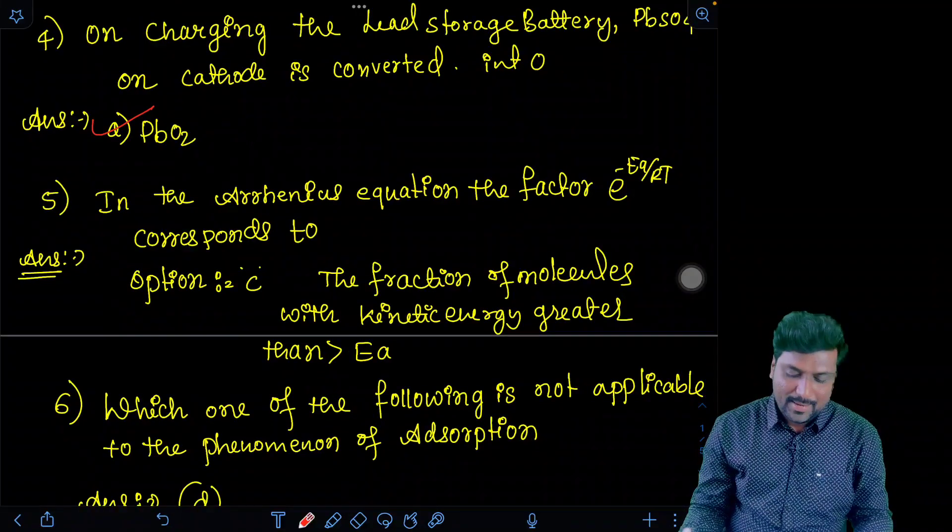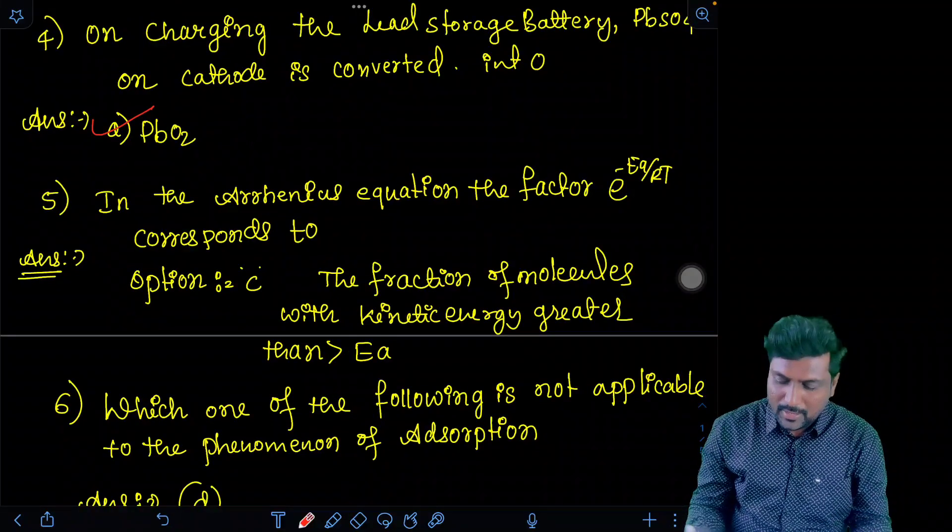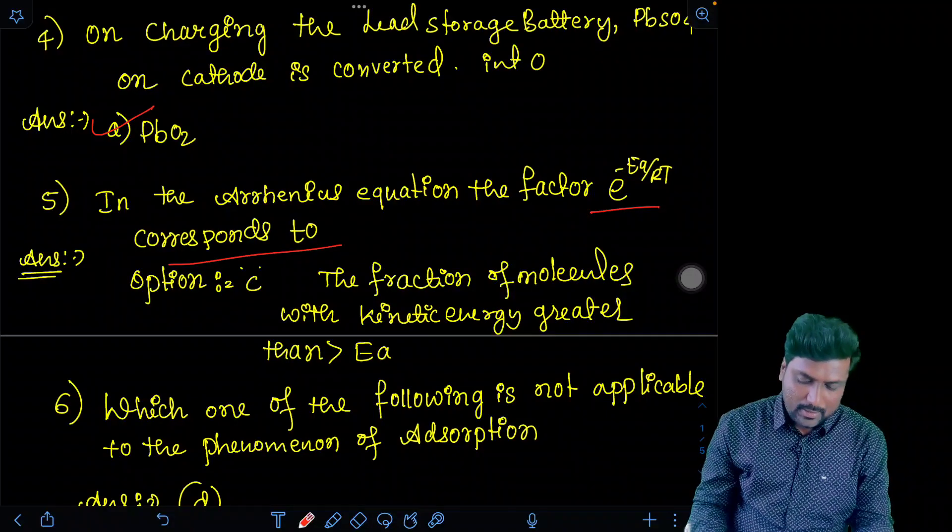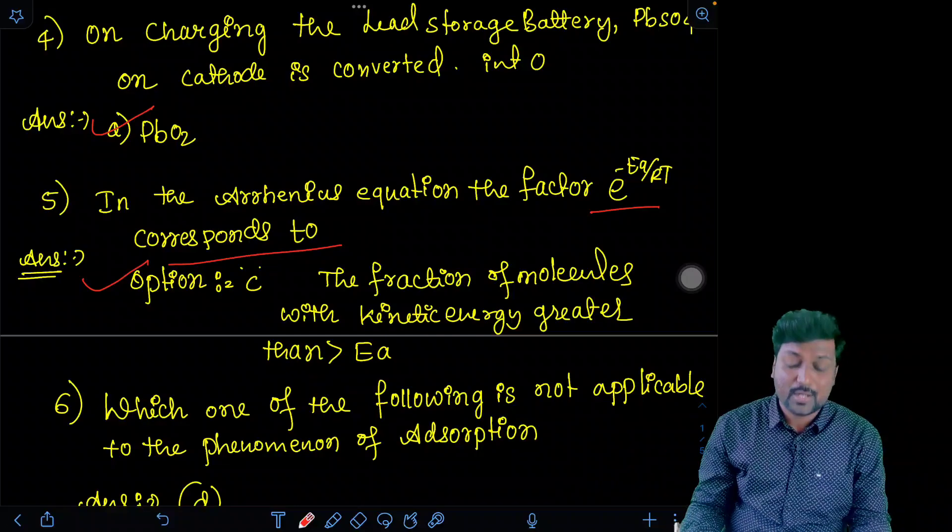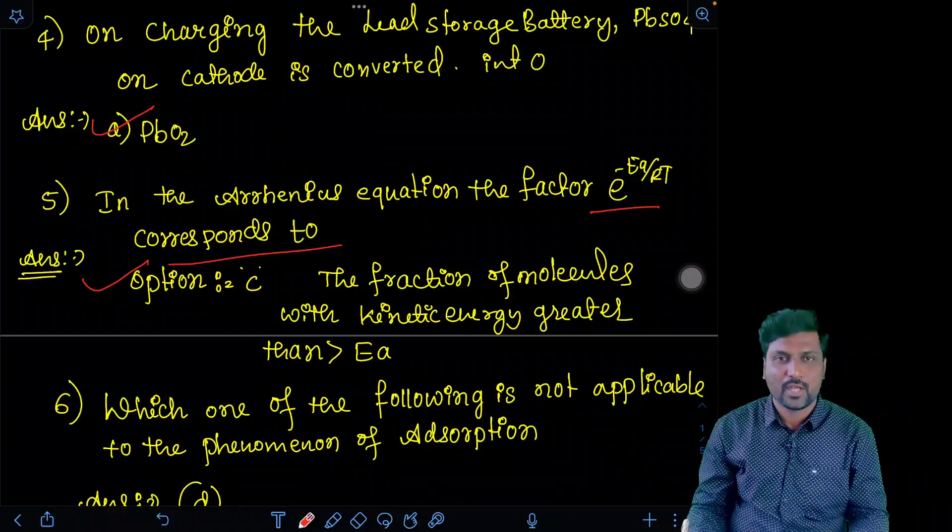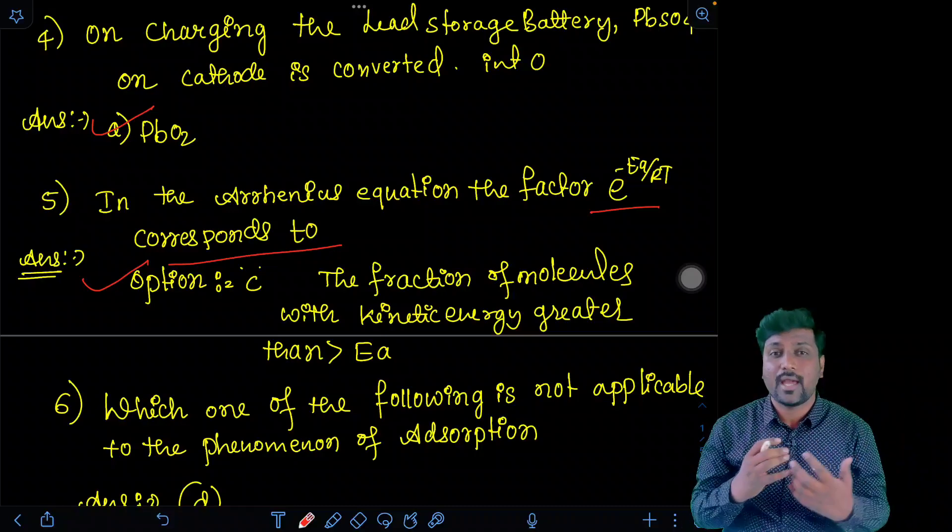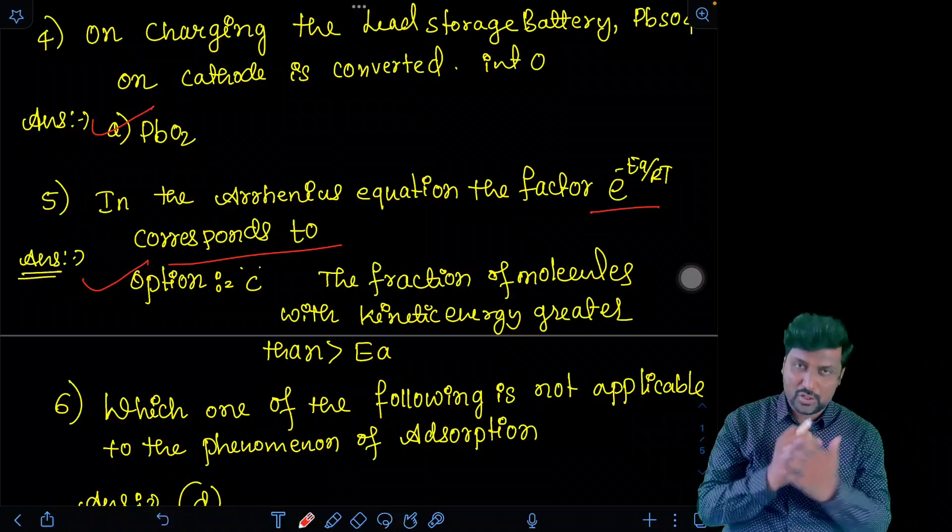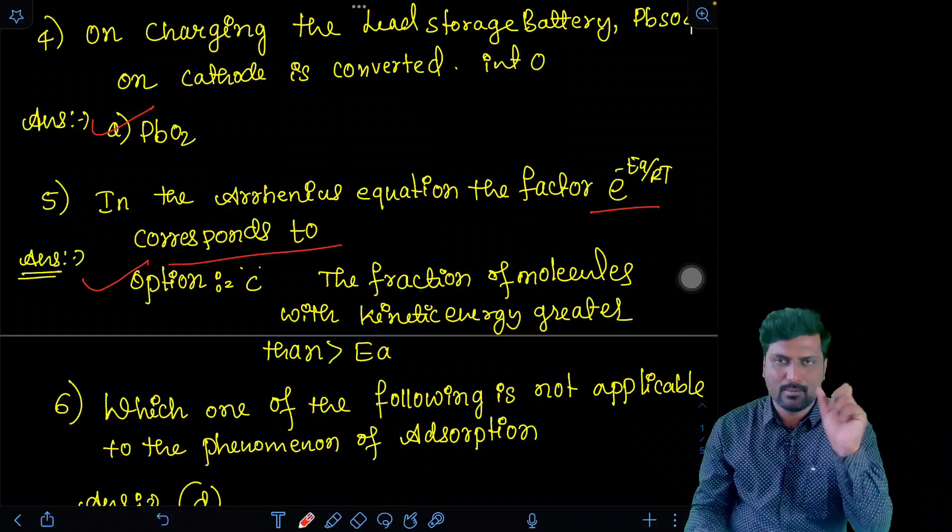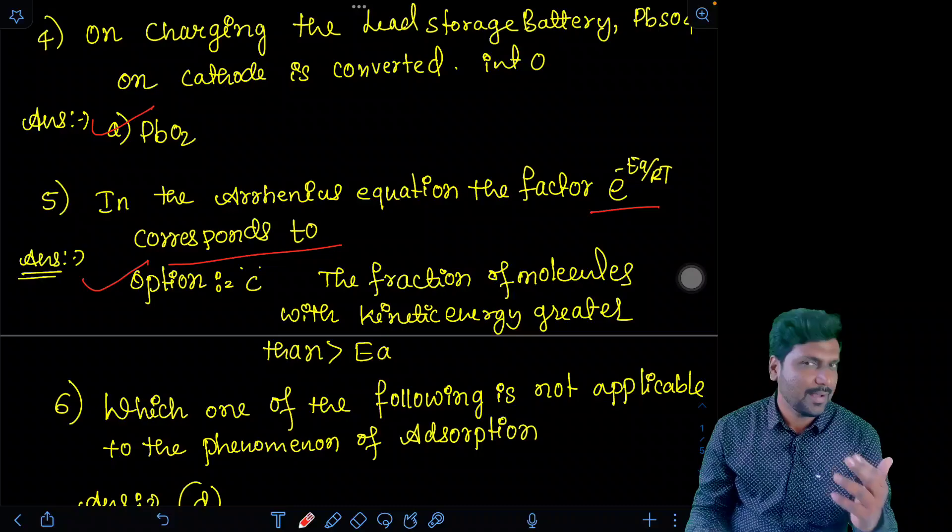Fifth question. In Arrhenius equation, the factor e to the power of minus Ea by RT corresponds to - that is option C - the fraction of molecules with kinetic energy greater than Ea. The fraction of molecules which are possessing kinetic energy that is greater than activation energy is the value of the term e to the power of minus Ea by RT.